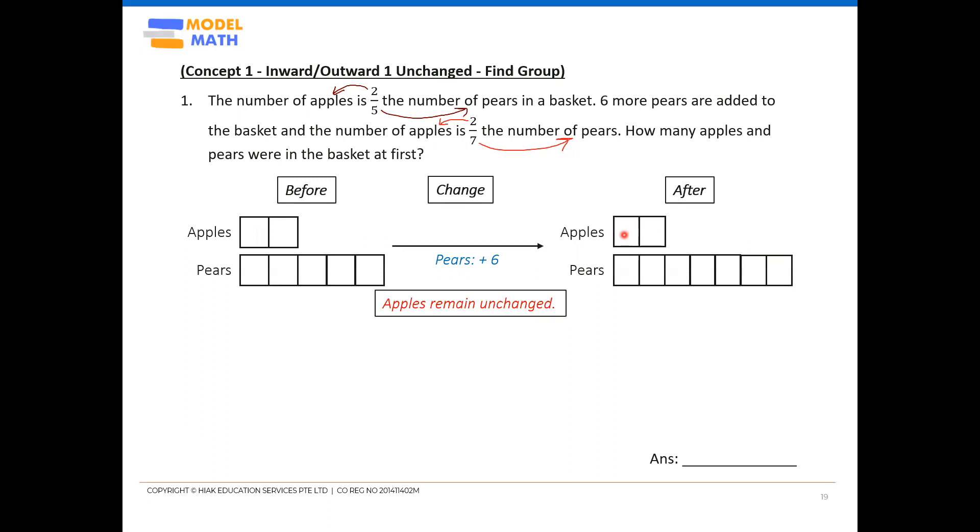Once you have established that apples stay the same throughout, you can solve using the six pears. To find out how many units in six pears, look at the before and after units. Pears before: 5 units. Pears after: 7 units. From 5 units it grew to 7 units because of six pears introduced, which means the change of two units (7U minus 5U) is equivalent to six pears. So two units equals six, and one unit equals three.